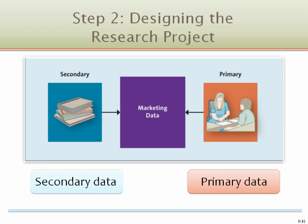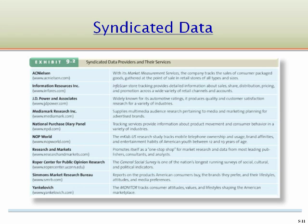After answering why and how, researchers must determine where they can find the data. Secondary data are pieces of information that have already been collected from other sources and are usually readily available — including census data, company sales invoices, and the Internet. In many cases, however, the information researchers need is available only through primary data, collected to address specific research needs. Marketers can also purchase syndicated data, which are data available for a fee from commercial research firms. This table contains information about various firms that provide syndicated data.